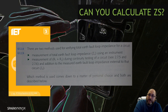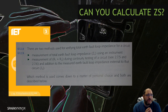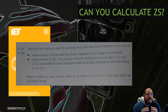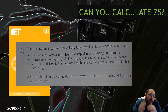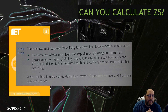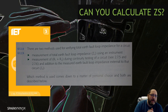But this sentence I just don't like at all. It says which method is used comes down to a matter of personal choice, and both are described below. I don't know why they said 'personal choice' — according to the wiring regulations, you measure, and then you calculate to verify a poor measurement. Personal choice is bad wording — very bad wording — because we're going to end up with what we have now: people just calculating it because it's quicker, cheaper, and they just can't be bothered.